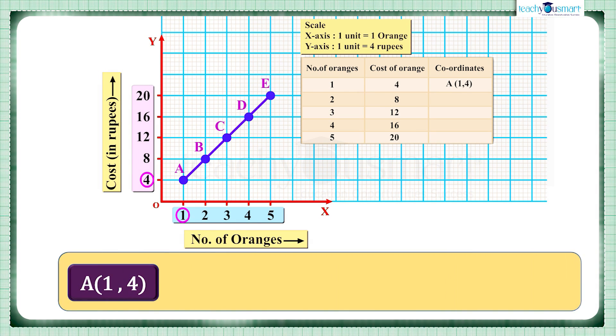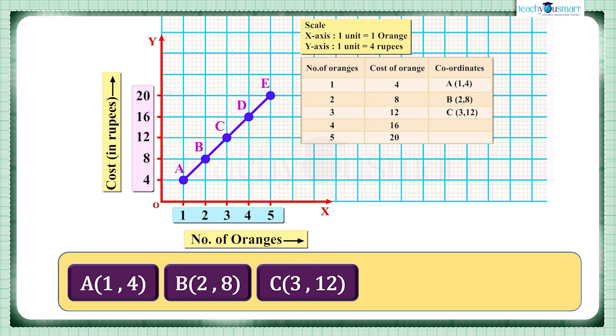Similarly, we can write the coordinates of other points. B is (2, 8), C is (3, 12), D is (4, 16), and E is (5, 20).